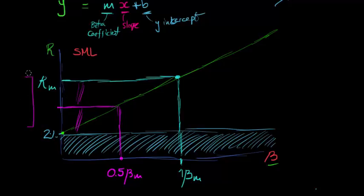As we rise up, and we go to 2, here we would have 2 times beta of the market. As we go up here, then at 2 times beta of the market, we've got an asset which is twice as risky.